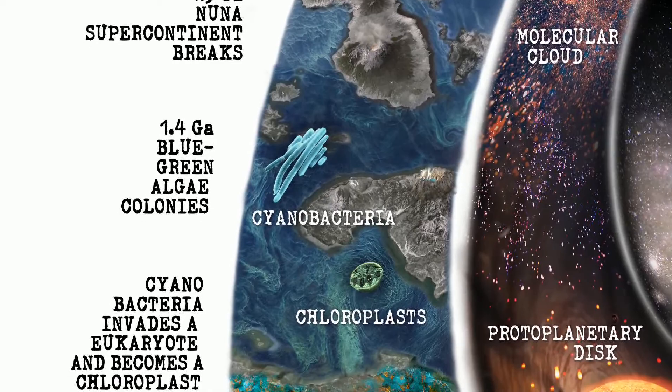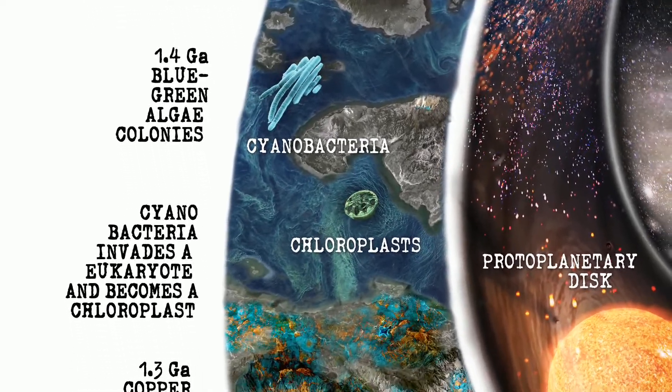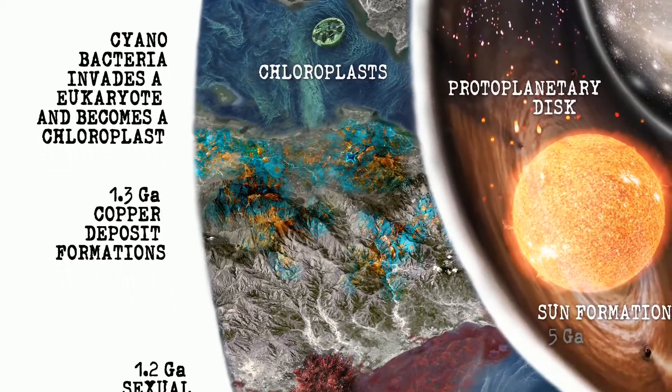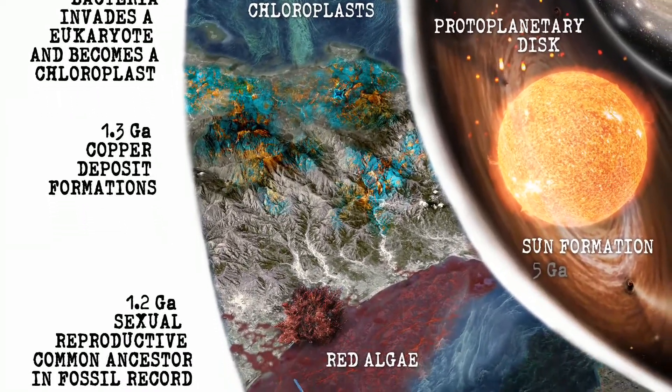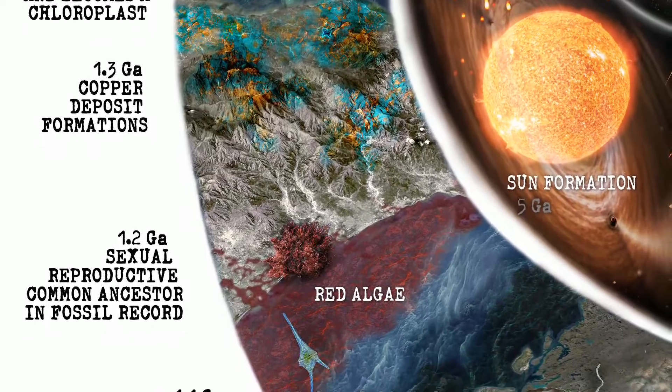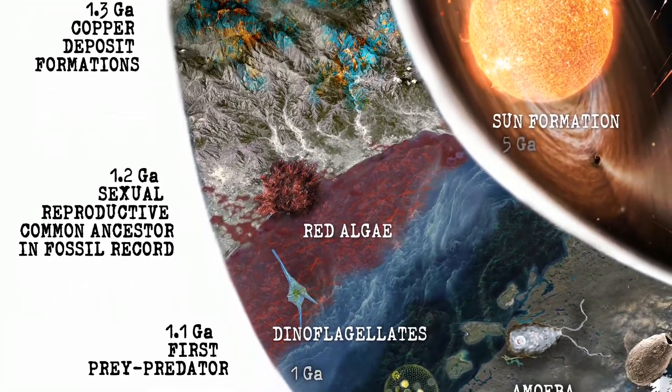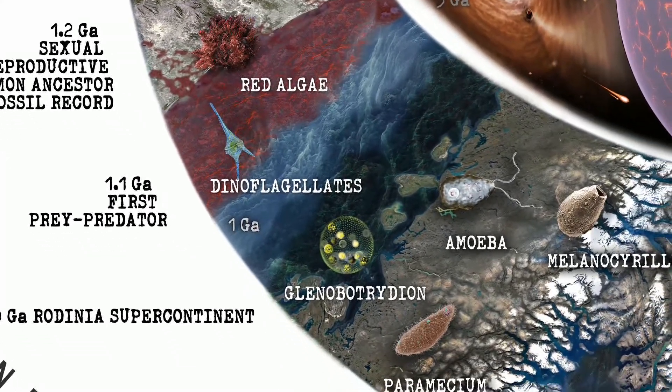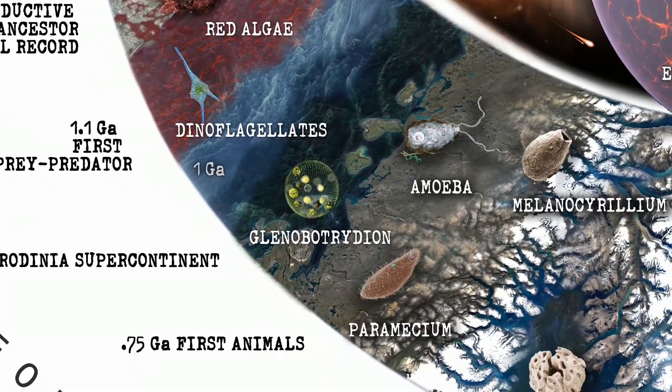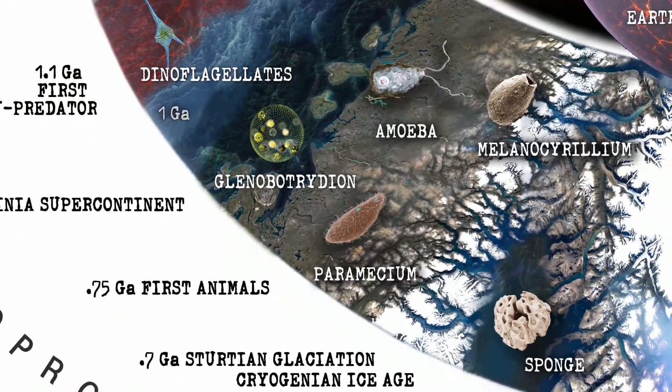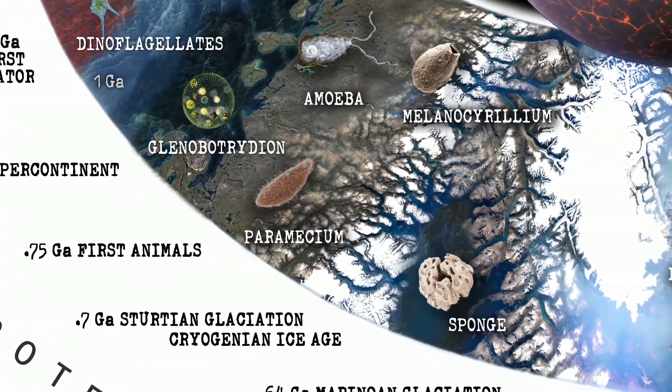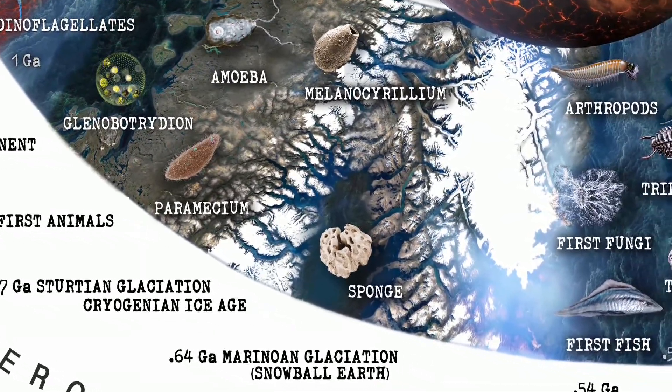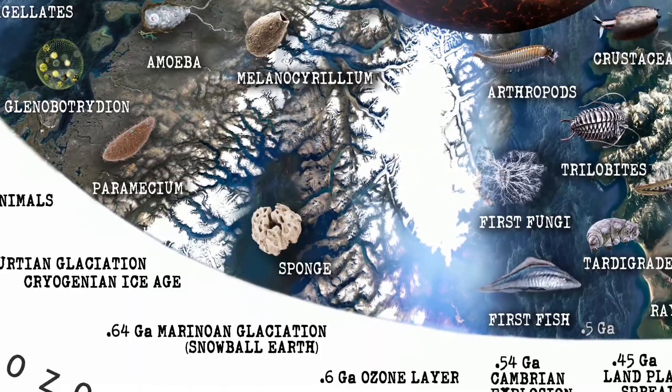Now photosynthesis gets focused into chloroplasts which eventually through endosymbiosis also become part of larger collectives of cells, such as red algae, dinoflagellates. Amoebas, the first, so to speak, protozoans. Maybe not exactly the first but for purposes here, that's what we're showing. Paramecium, melancerillium, also single-celled protozoans.